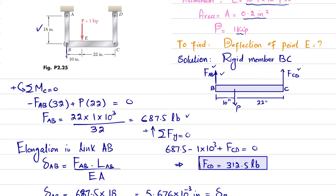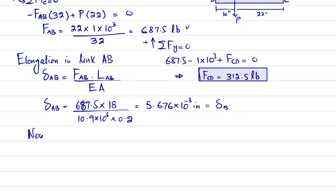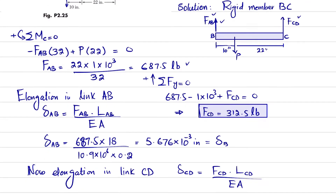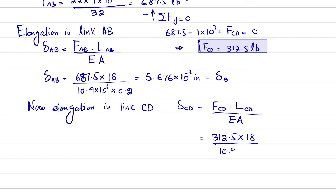The elongation of link CD: δCD = FCD×LCD divided by E×A. Since both links are the same material, E and A are the same. FCD = 312.5 lb, length = 18 inch, E = 10.9×10⁶ psi, area = 0.2 in². Calculating gives δC = 2.5803×10⁻³ inch. Point C will also move downward by this amount.